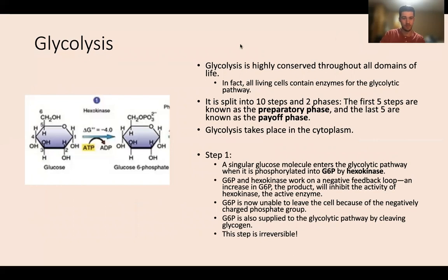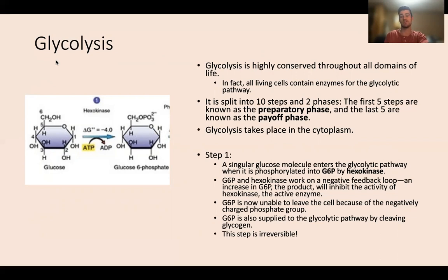Glycolysis is highly conserved throughout all domains of life — any type of life you look at performs glycolysis in the cytoplasm. All living cells contain enzymes for the glycolytic pathway. It's split into 10 steps, subdivided into two phases: the first five steps are the preparatory phase, and the last five are the payoff phase. In the preparatory phase, we spend a little energy for a bigger payoff in the second half. Glycolysis takes place in the cytoplasm.